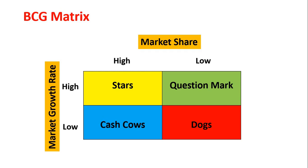On your screen what you can see is called the BCG matrix. This BCG matrix is developed by Boston Consulting Group. It classifies the various businesses in a firm's portfolio on the basis of relative market share and relative market growth rate. So let's see what is BCG matrix.